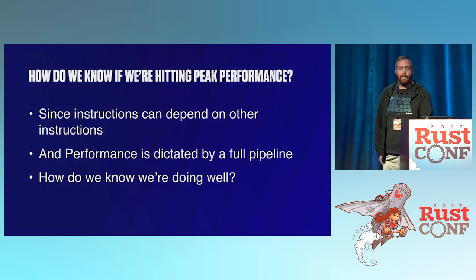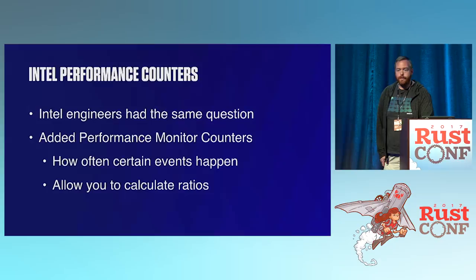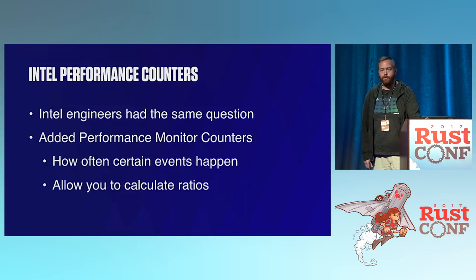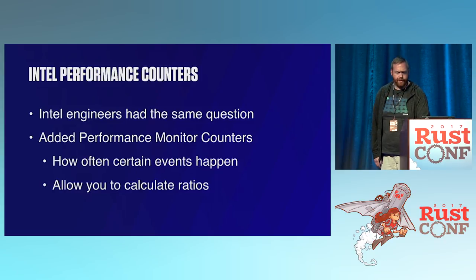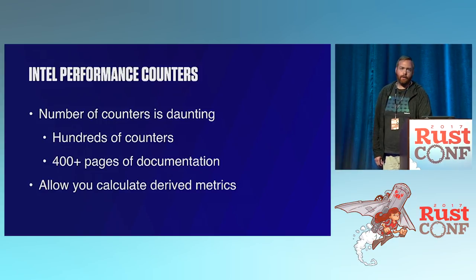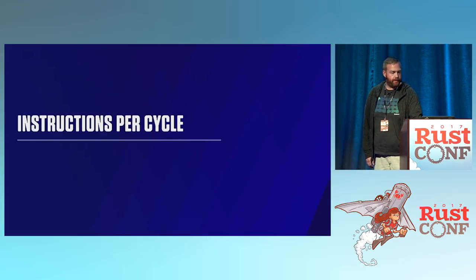Given how complicated things are and since instructions can depend on each other causing huge bubbles in the pipeline, how do we know we're doing well? We enter the realm of the performance counter. Intel engineers had the same question and added performance monitor counters — just like the counters in the benchmark I showed — to track how often things occur and allow you to calculate ratios. There are hundreds of counters inside a modern Intel CPU and hundreds of pages of documentation.